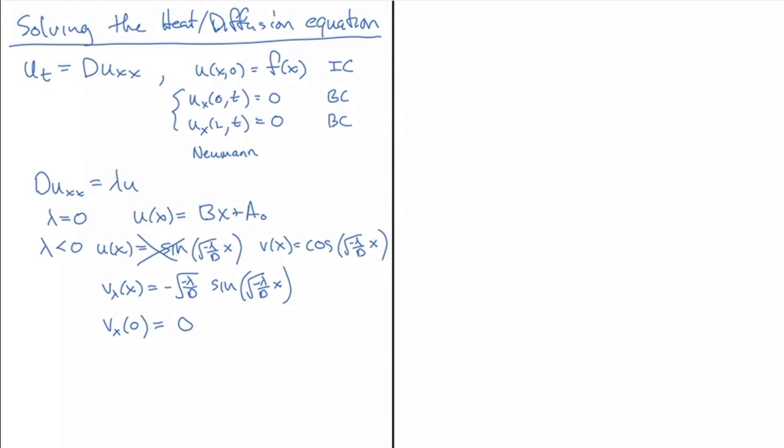So, I get that for free as long as I choose the cosines. And then v_x at l has to also be equal to zero. That's not as obvious, because that's not true for all of these lambda values. But as in the Dirichlet case, when I plug in l here, I want that to be zero. All of a sudden, we're now limited in our choice of lambda values.